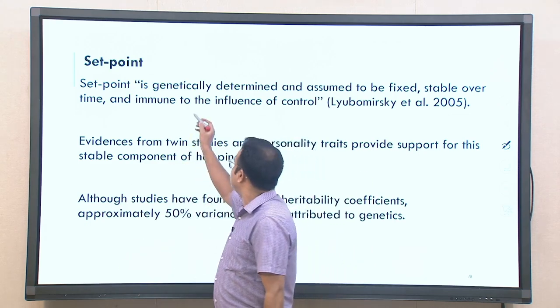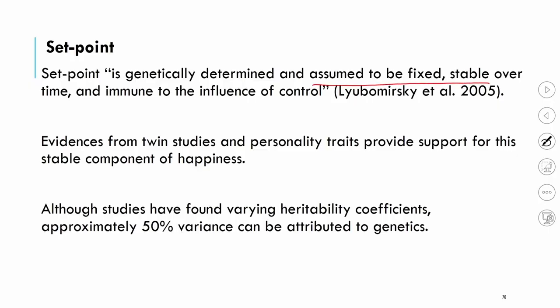These genetic factors are generally fixed, stable over time, and resistant to control. Because they are influenced by deep biological factors within us, they are very stable. If something is determined by genes, it is not easy to change. In that sense, they function as set points — fixed reference points around which our experiences operate.